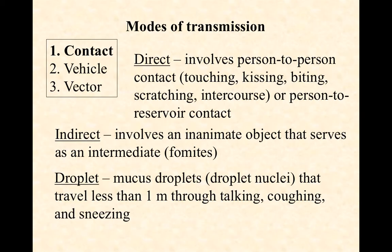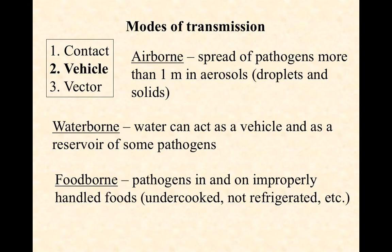Indirect contact transmission uses something called a fomite — sometimes pronounced 'fomity' — which is an inanimate object acting as an intermediate. Examples include a pen you're chewing on, a toothbrush someone else used, or a doorknob. Any of these can act as a fomite involved in indirect contact transmission.